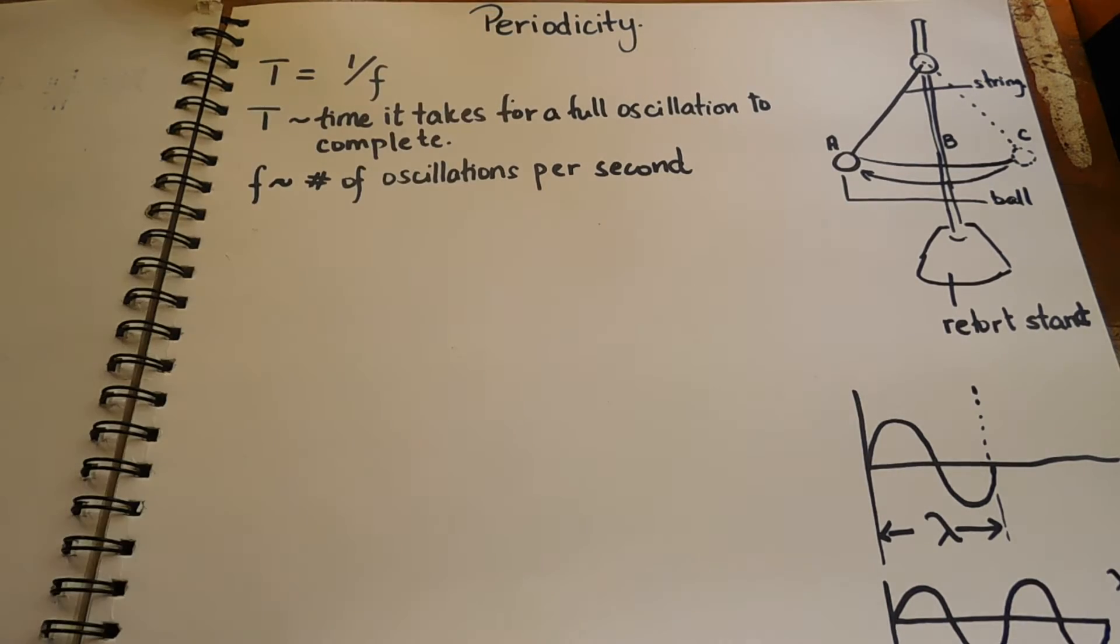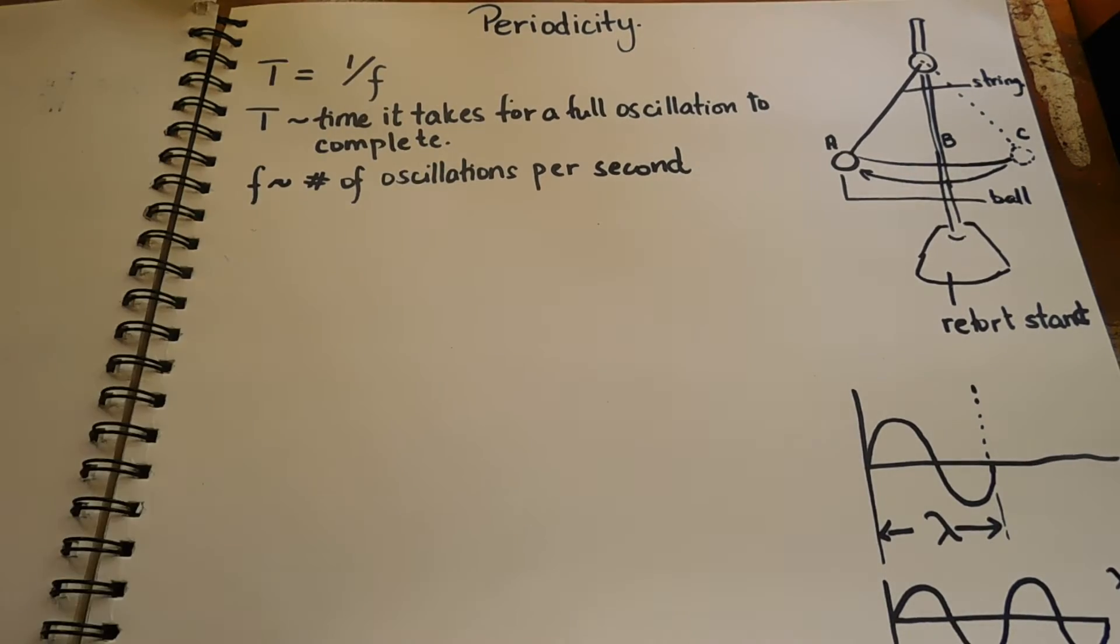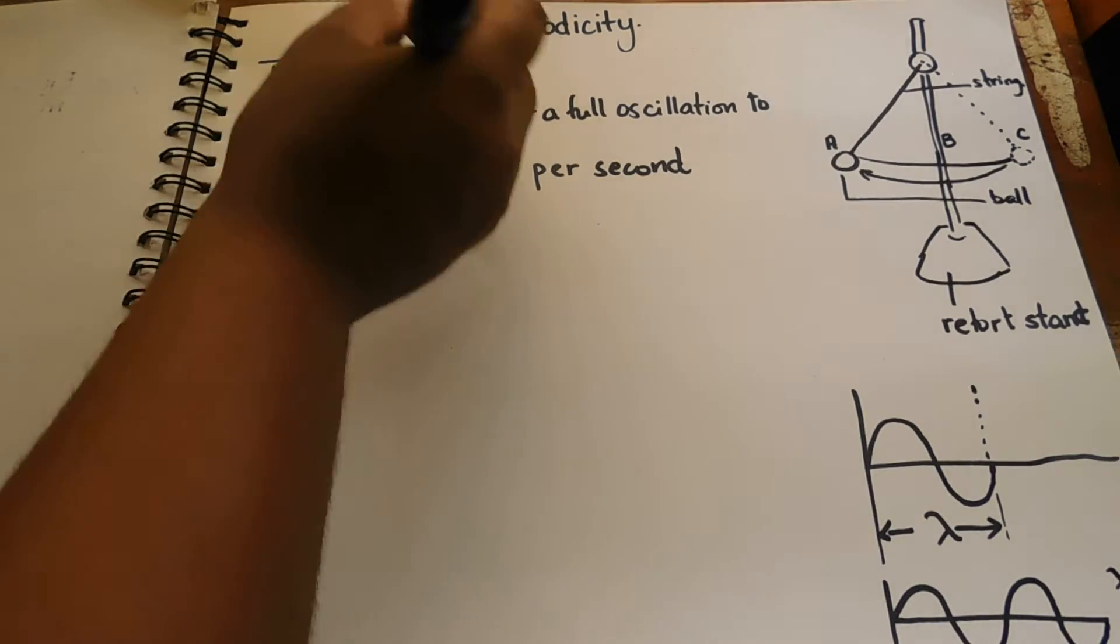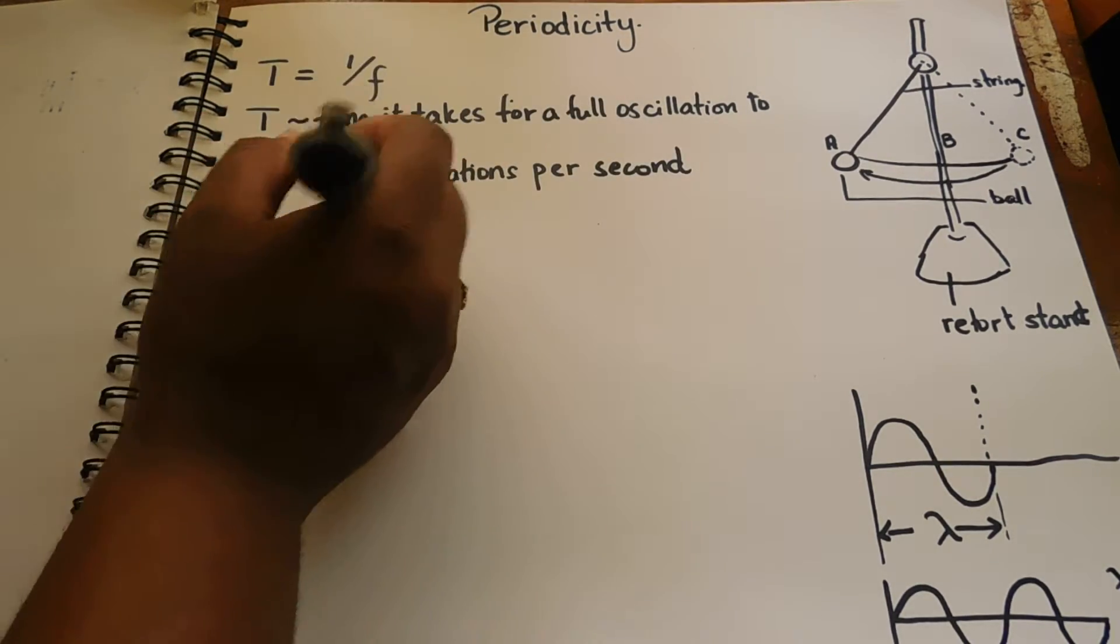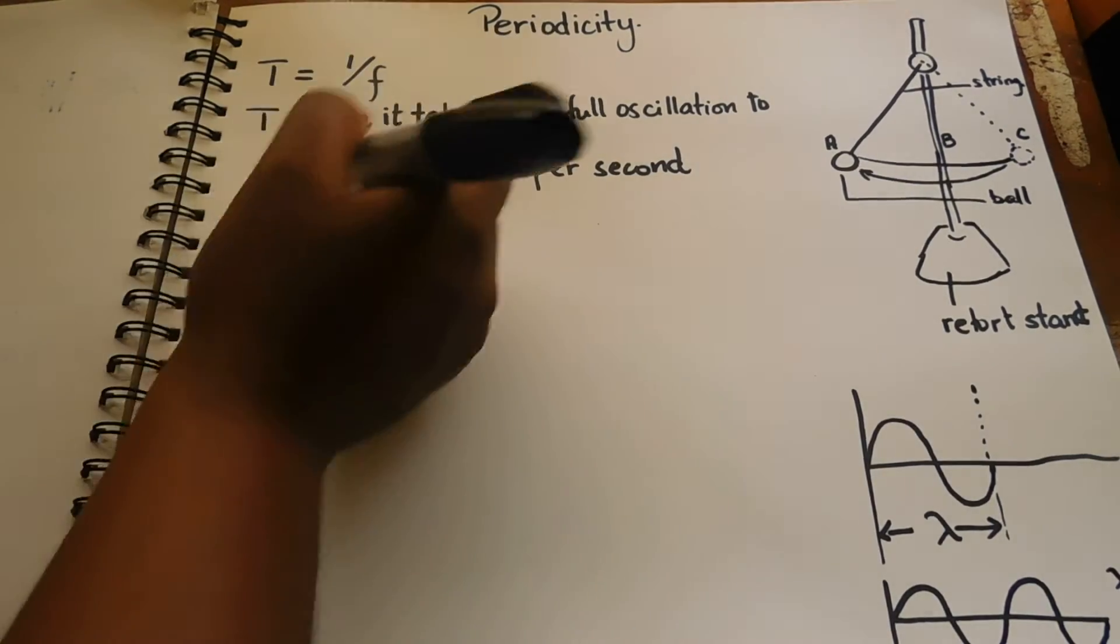Now here we have T, which is the time. F is the frequency, the amount of oscillations per second.